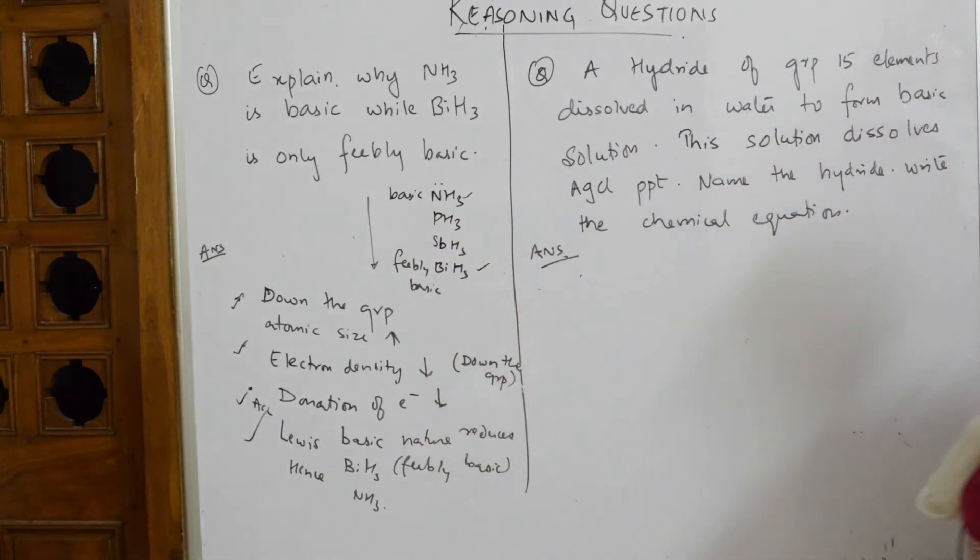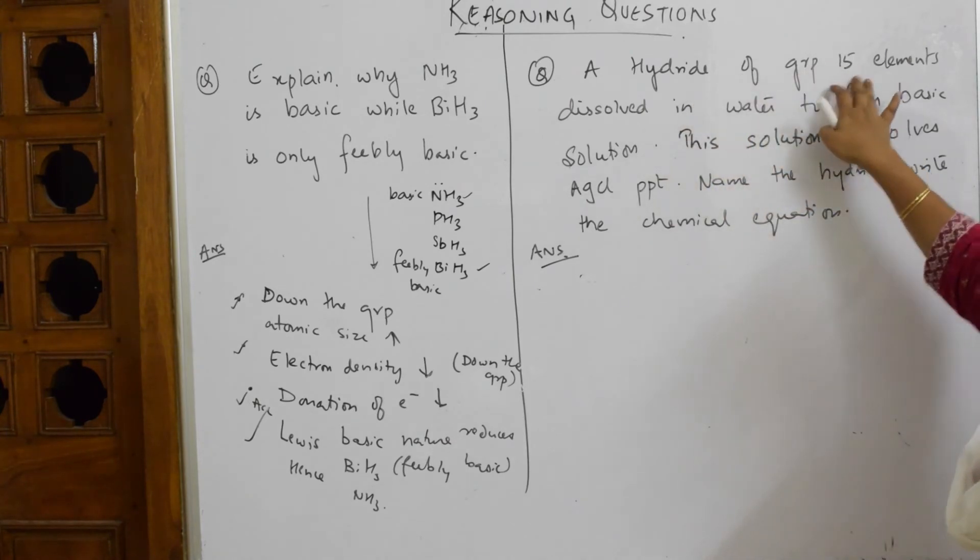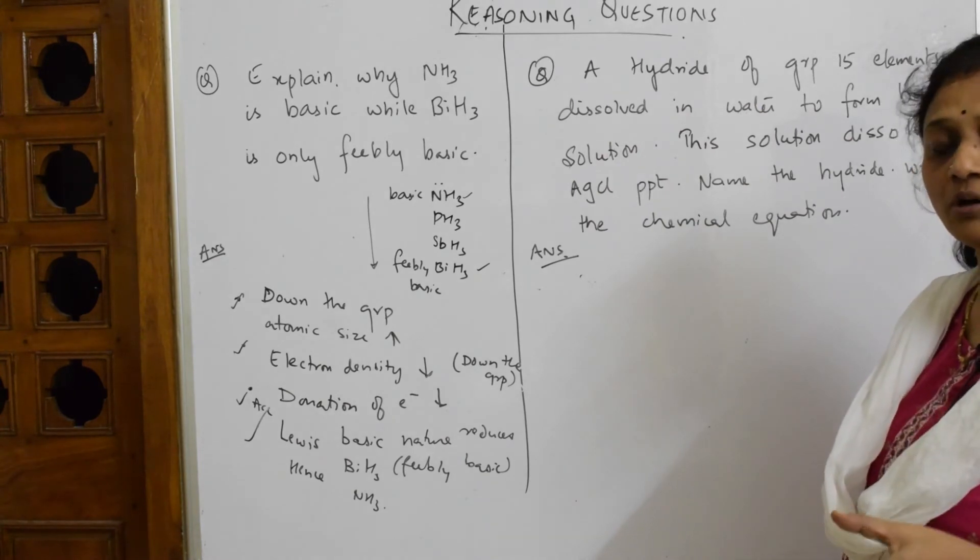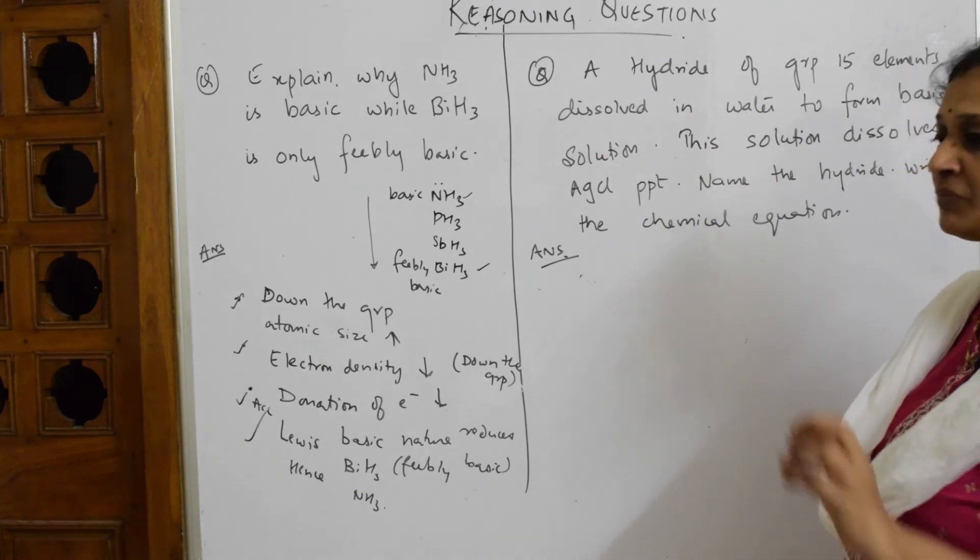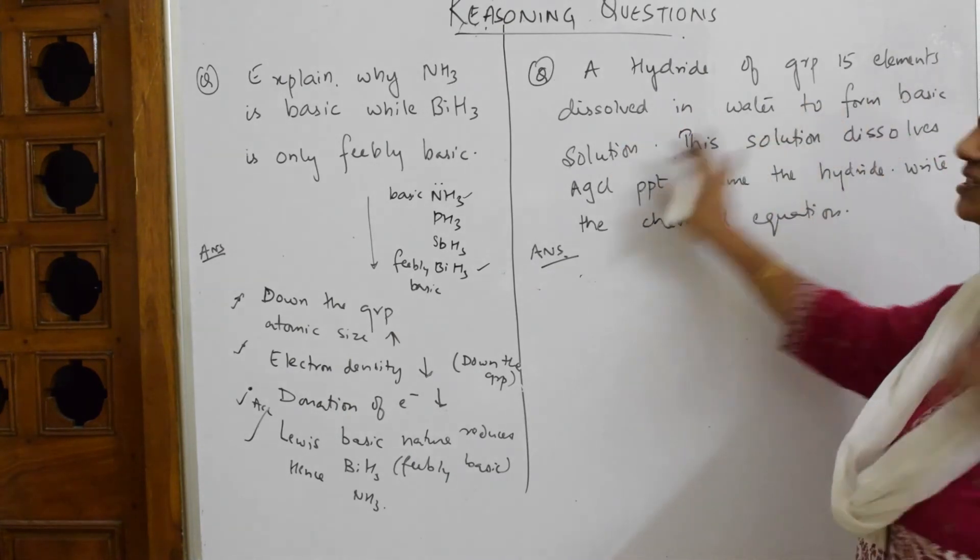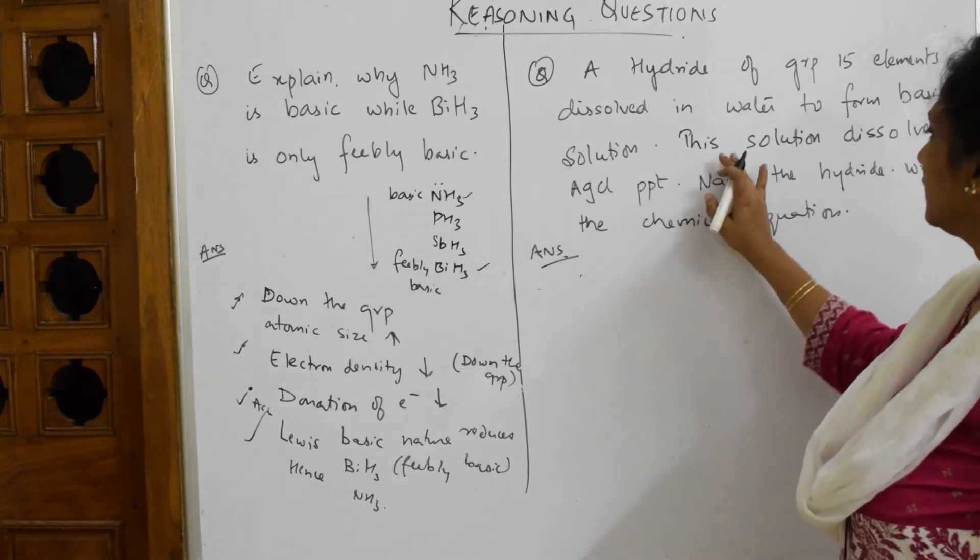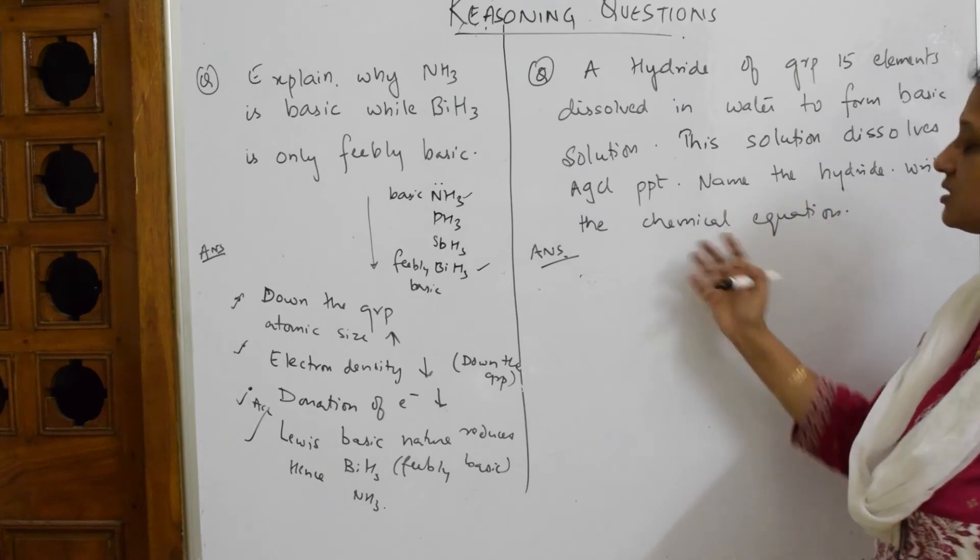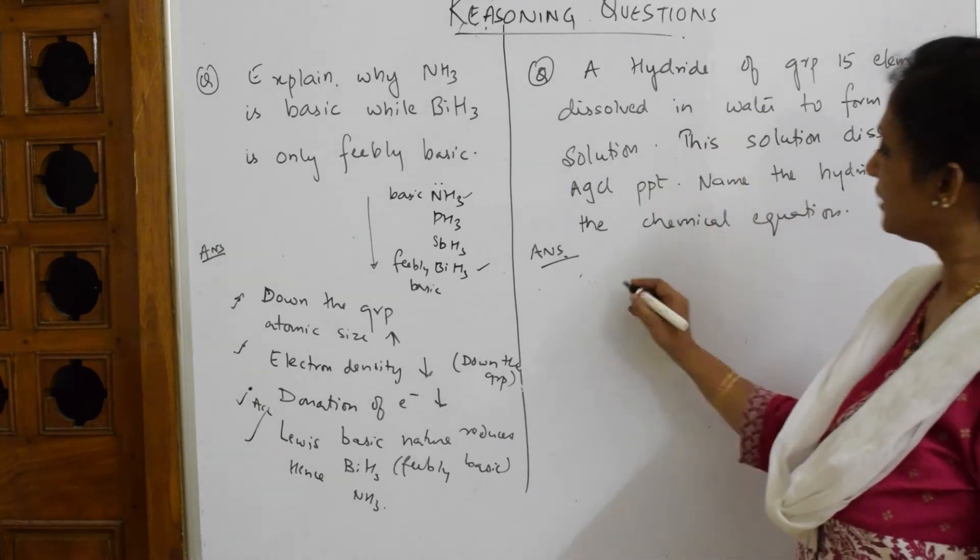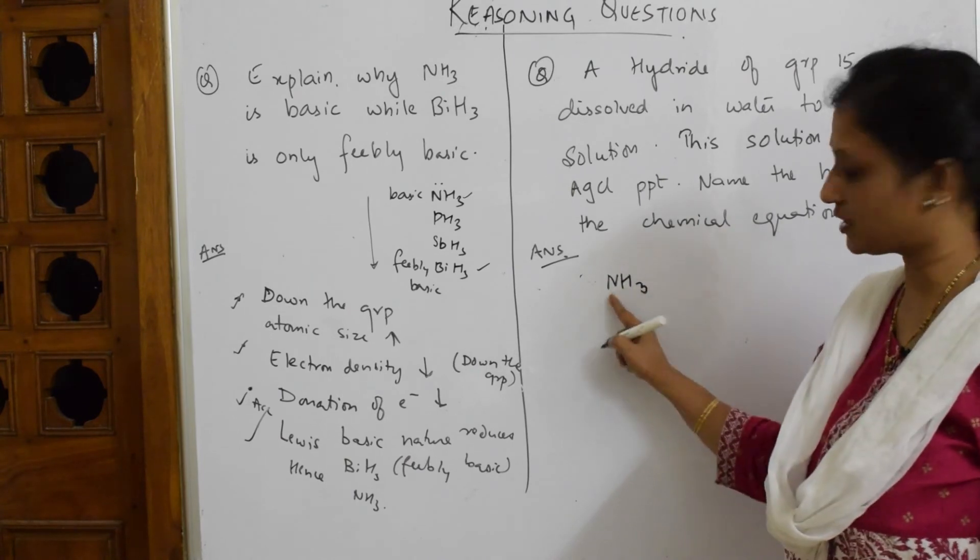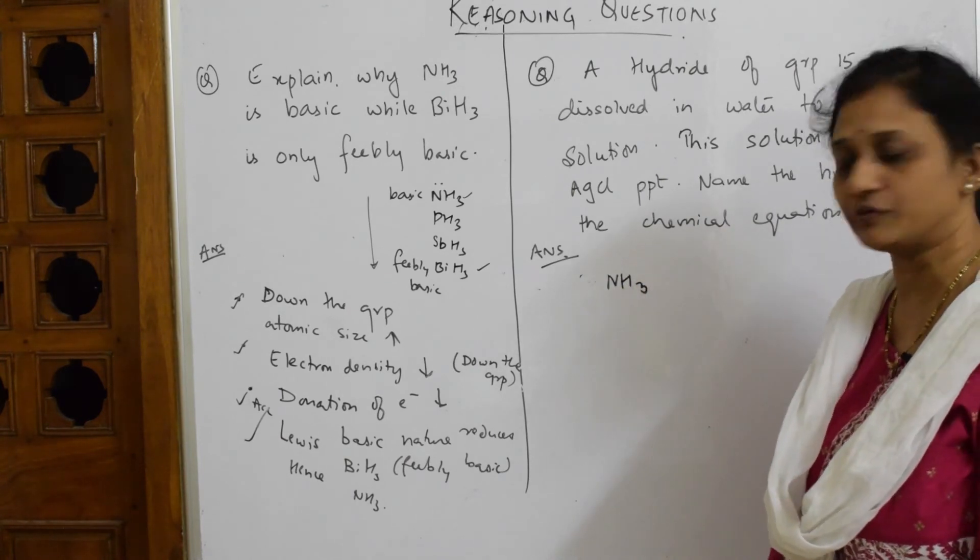Now they've given me one paragraph-based question. The hydride of group 15 element dissolved in water to form a basic solution. This solution dissolves AgCl precipitate. Name the hydride and write the chemical equation. Let me take one hydride of group 15: NH3. Nitrogen is group 15. This is dissolved in water.